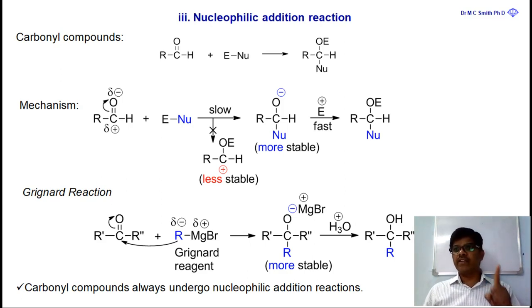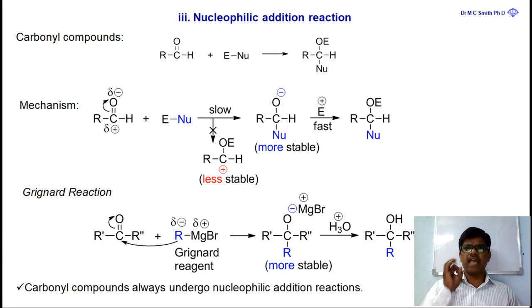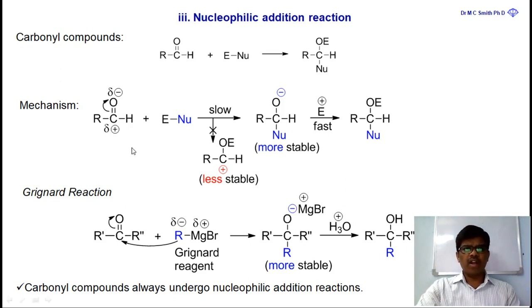Alkenes undergo electrophilic addition reactions, while carbonyl compounds undergo nucleophilic addition reactions. If a nucleophile is added first to the carbonyl carbon, the intermediate obtained is O⁻, which is more stable because oxygen is more electronegative and can accommodate a negative charge easily. If an electrophile were added first to oxygen, the intermediate would be C⁺, which is less stable.